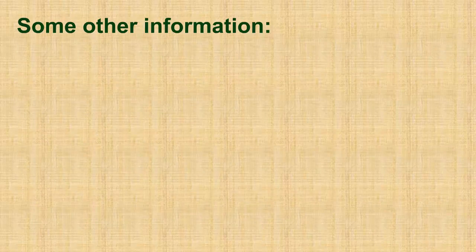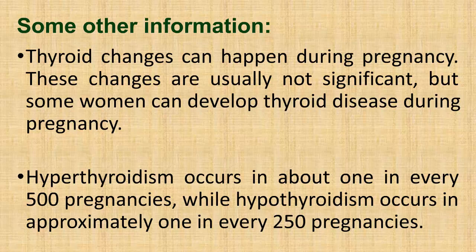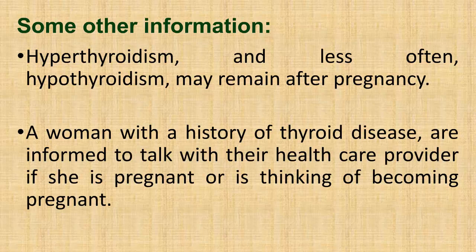Some other information: Thyroid changes can happen during pregnancy. These changes are usually not significant, but some women can develop thyroid disease during pregnancy. Hyperthyroidism occurs in about 1 in every 500 pregnancies, while hypothyroidism occurs in approximately 1 in every 250 pregnancies. Hyperthyroidism, and less often hypothyroidism, may remain after pregnancy. A woman with a history of thyroid disease is advised to talk with their health care provider if she is pregnant or is thinking of becoming pregnant.